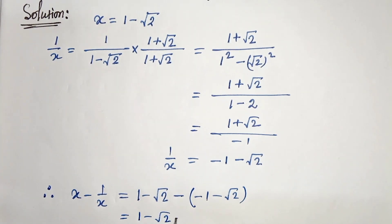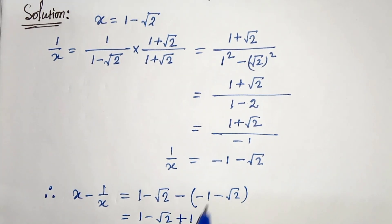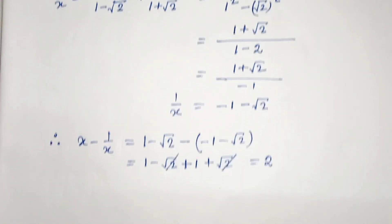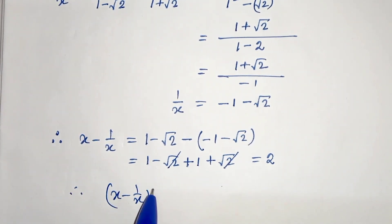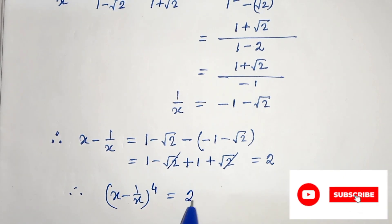And plus root 2 gets cancelled, so 1 plus 1 is 2. Therefore, x minus 1 by x whole to the power 4 will be 2 to the power 4, which is 16. This is our solution. Thanks for watching.